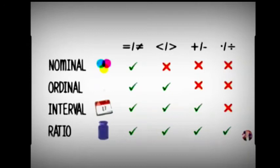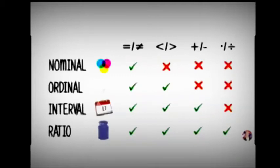The first one is the nominal scale. The nominal scale is used for naming or labeling. Mathematically, it represents a number or label to identify categories.